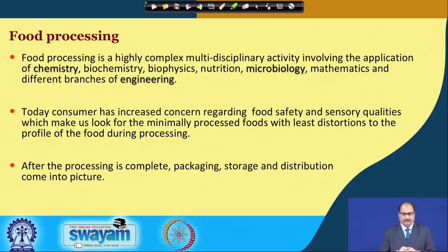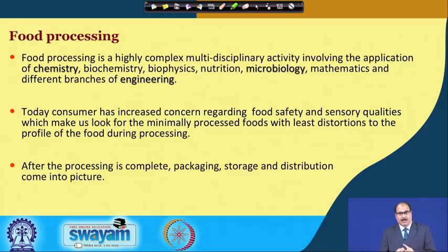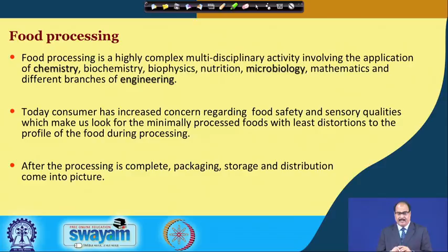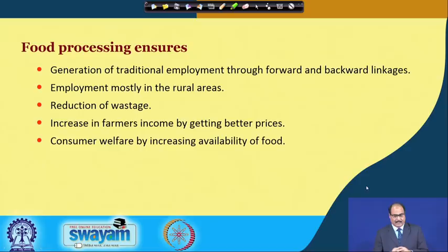Having given a brief background about the science of food, let us now switch over and discuss briefly about food processing. Food processing is a highly complex multidisciplinary activity involving the application of chemistry, biochemistry, biophysics, microbiology, mathematics and different branches of engineering. Today, consumers have increased concern regarding food safety and sensory qualities, which makes us look for minimally processed foods with least distortion to the profile of the food during processing. After processing is complete, packaging, storage and distribution come into picture. Food processing ensures generation of traditional employment through forward and backward linkages, mostly in rural areas.